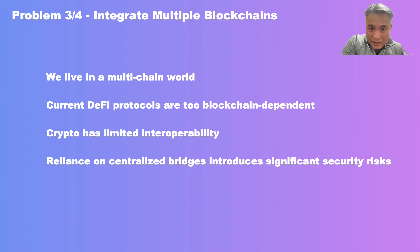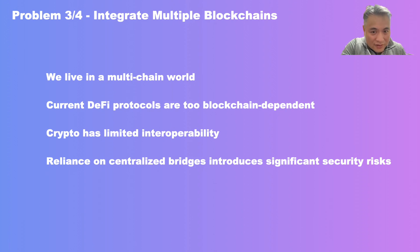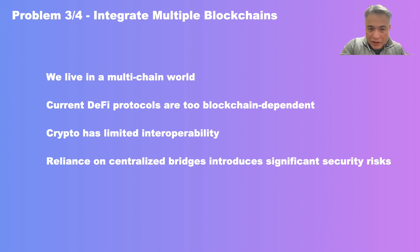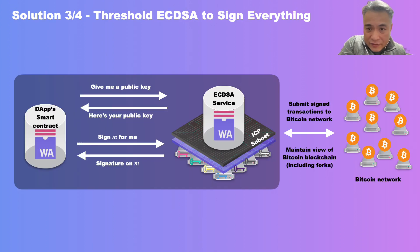The third issue we want to tackle is integrating multiple blockchains. We live in a multi-chain world, but blockchains don't talk to each other much, and when they do, the communication is not very secure. Current DeFi solutions are too blockchain-dependent or very homogeneous, offering very little interoperability, and almost all of them rely on centralized bridges. All centralized bridges that involve humans will be compromised in the end — it's not a question of if, but a matter of when.